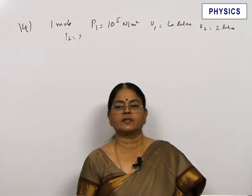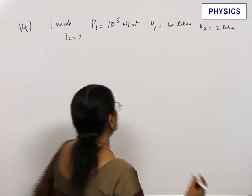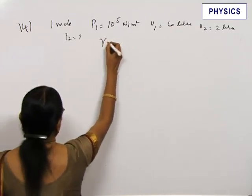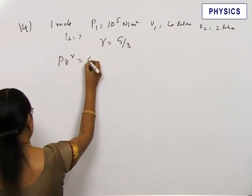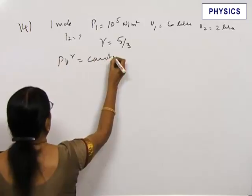So it is an ideal gas, that means monatomic gas. So what is gamma? First of all let us write gamma equals 5/3, then use PV^gamma equal to constant to get final pressure.